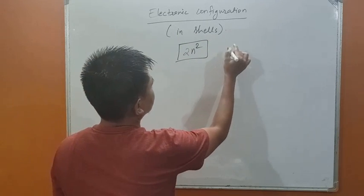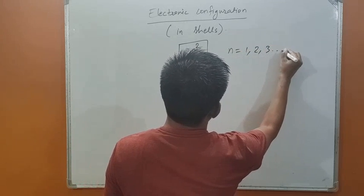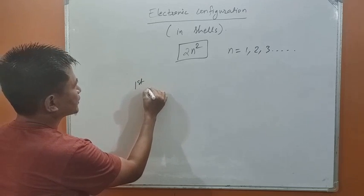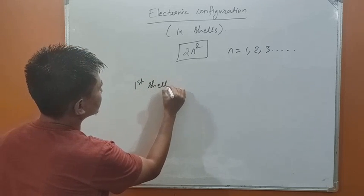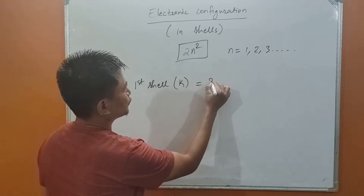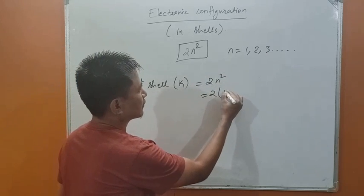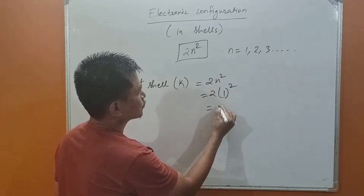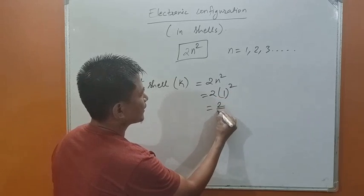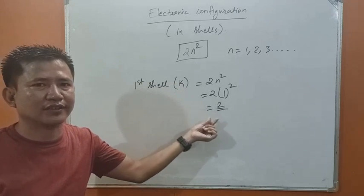Where n is a positive integer — n equals 1, 2, 3, and so on. The maximum number of electrons that can go into the first shell, also called the K shell, is 2n squared. For n equals 1, that is 2 into 1 squared, which equals 2. So the maximum number of electrons in the K shell is 2.